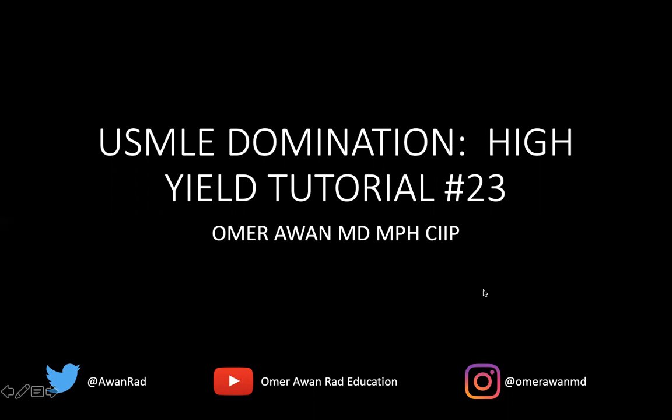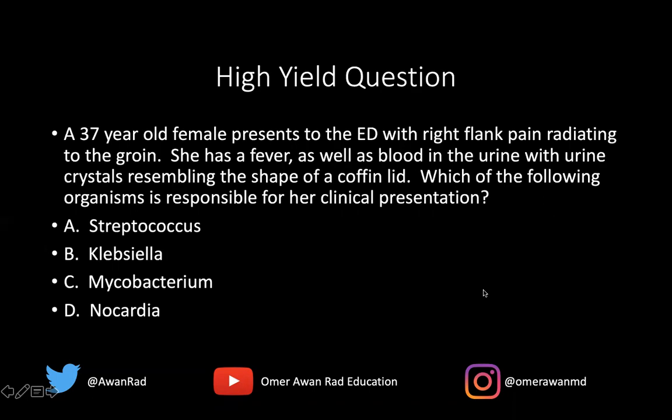We're going to start out with a high yield question like we always do. This is a 37-year-old female presenting to the ED with right flank pain radiating to the groin. She has a fever as well as blood in the urine with urine crystals resembling the shape of a coffin lid. Which of the following organisms is responsible? Is it Streptococcus, Klebsiella, Mycobacterium, or Nocardia? We'll come back to this at the very end.